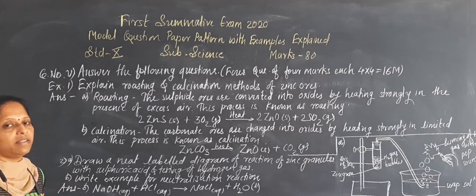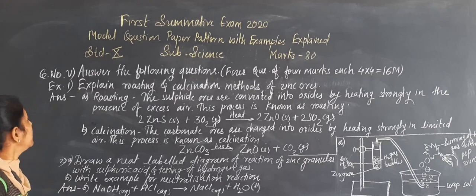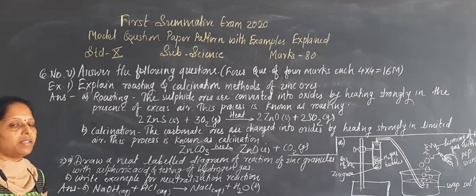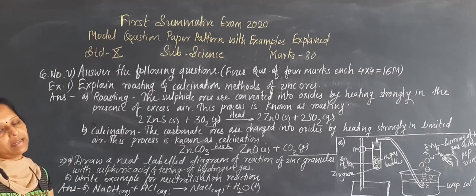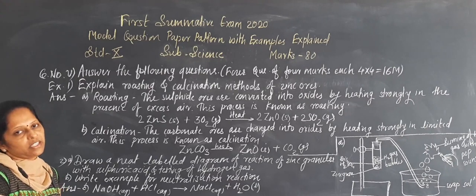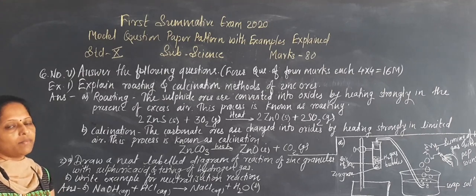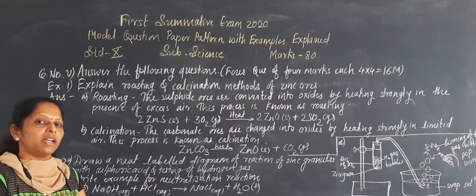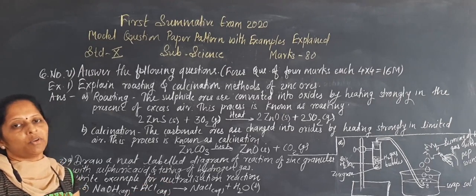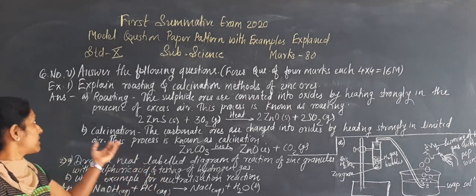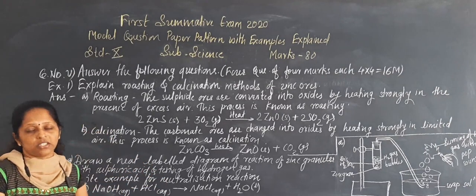The highly-reactive, high-activity series methods are important. The extraction method for the low, middle, and high activity series is very much important for your syllabus. The roasting and calcination method applies to the middle activity series. Sometimes the question will directly ask you to explain the extraction of metals of the middle-activity series, or they may ask you to explain the roasting and calcination method.